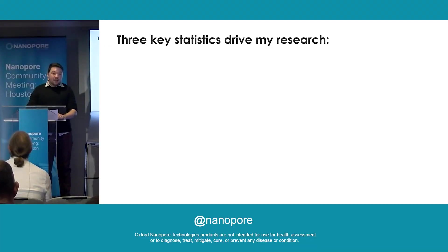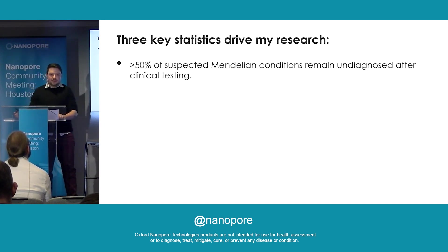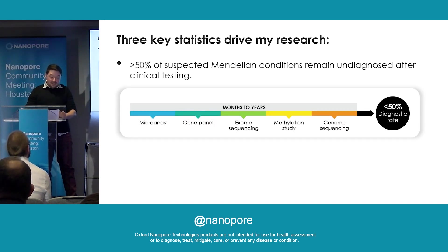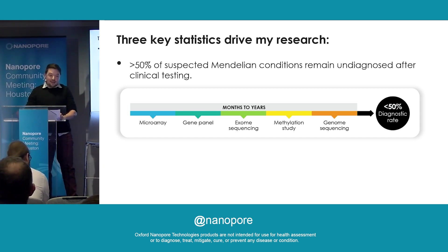There are three key statistics that drive my research. The first is that over 50% of suspected Mendelian conditions remain undiagnosed after clinical testing. That is to say that if an individual goes in with an undiagnosed disease and they go through microarray, gene panel, exome sequencing, and methylation studies, it's more likely than not that they will remain without a molecular diagnosis.